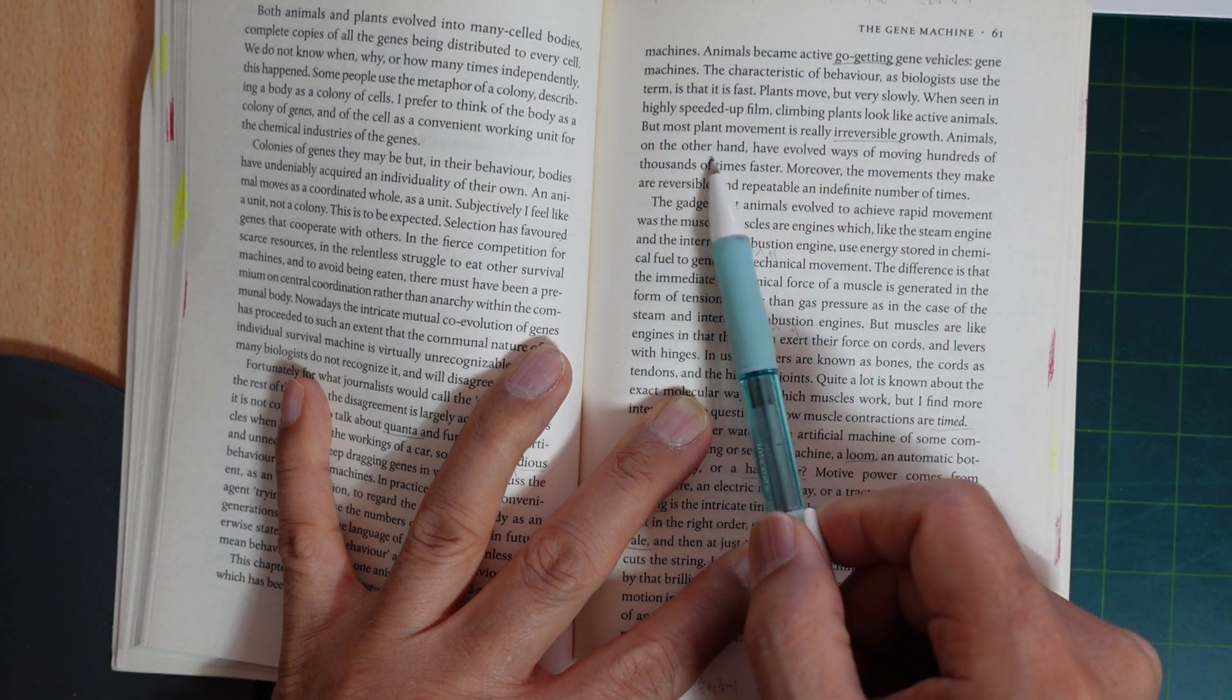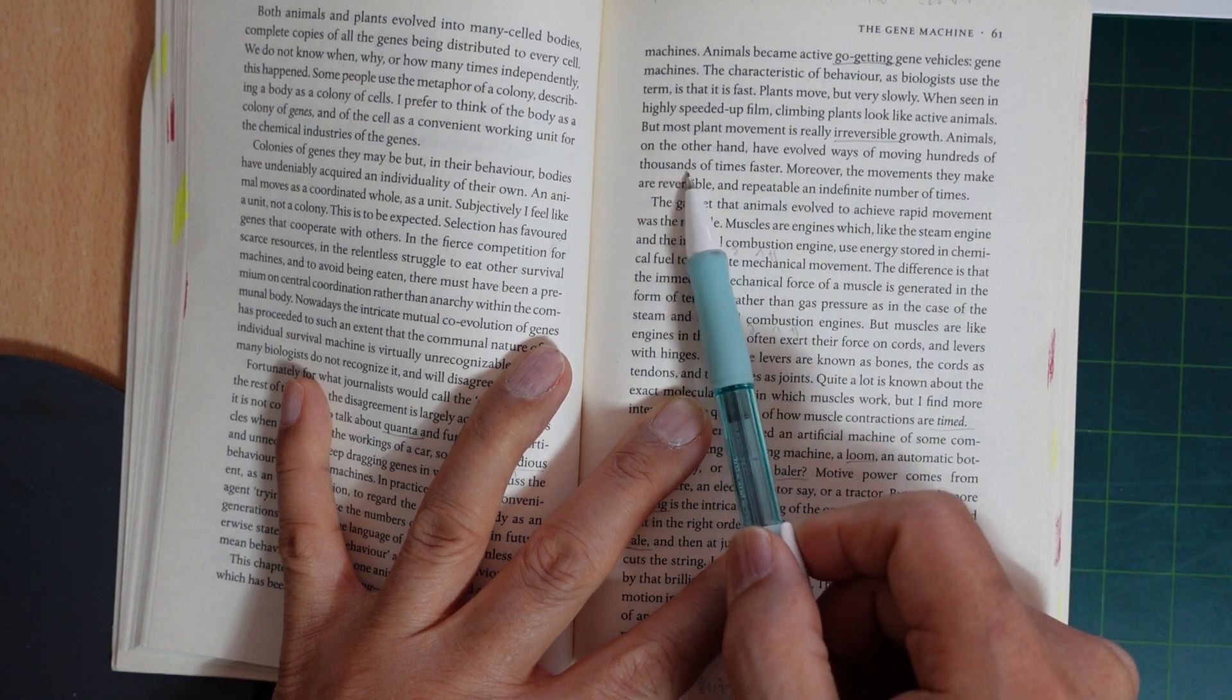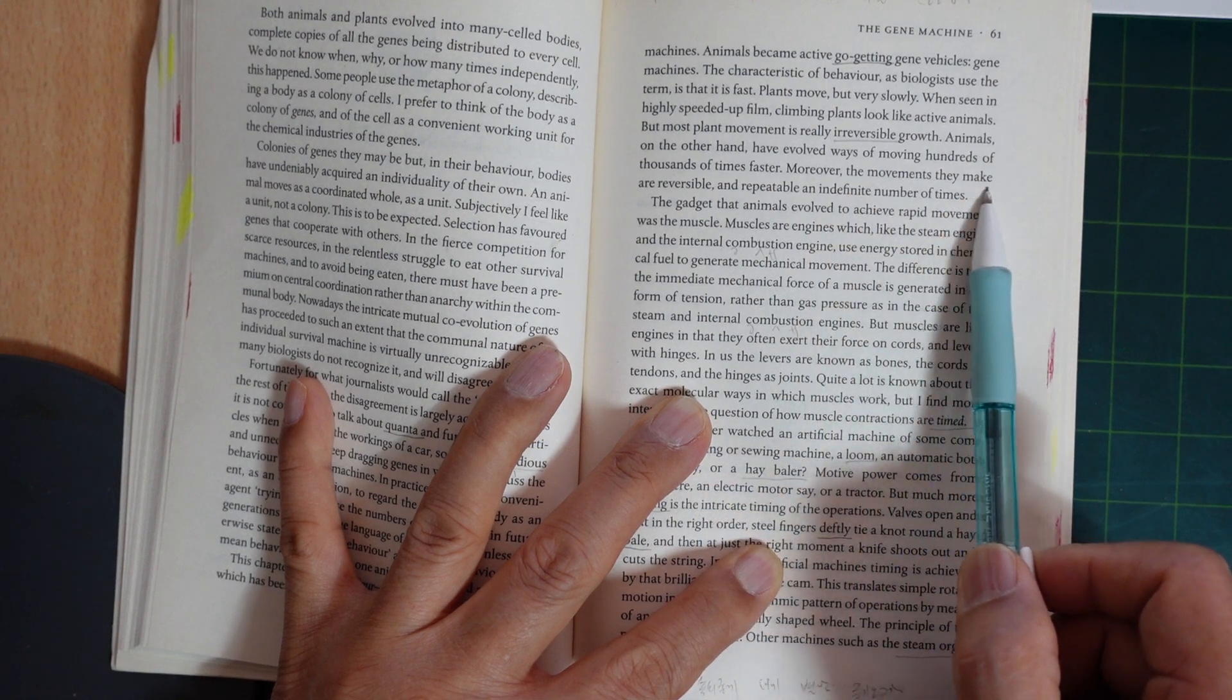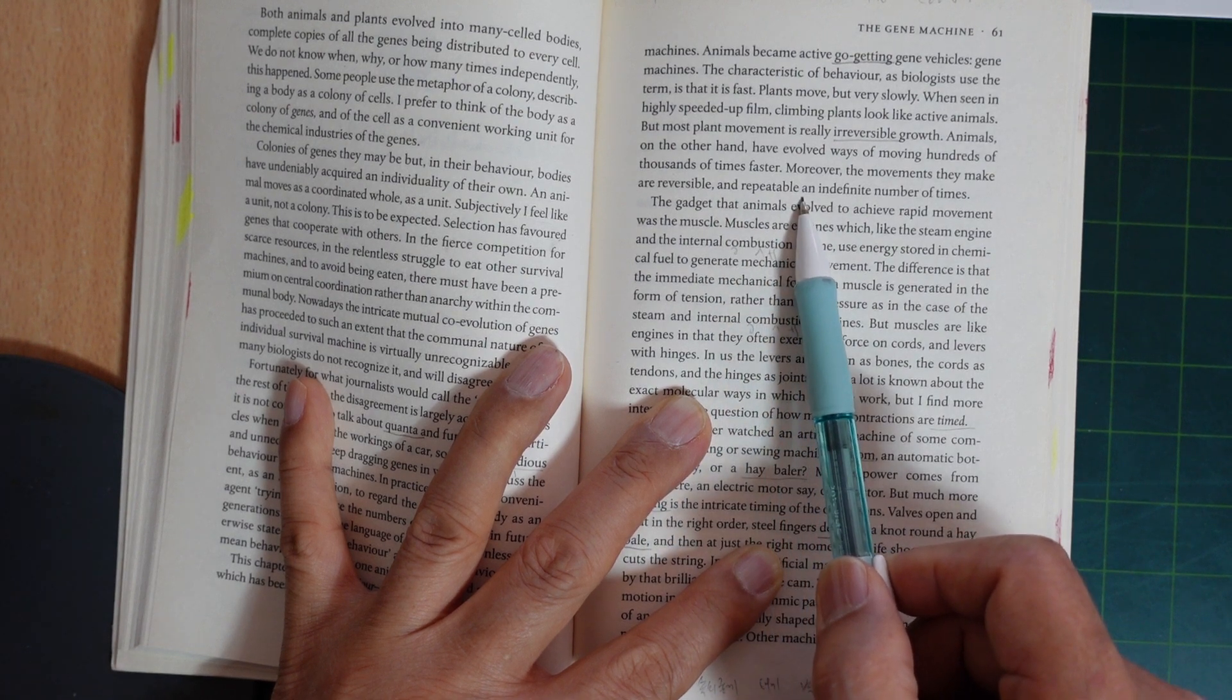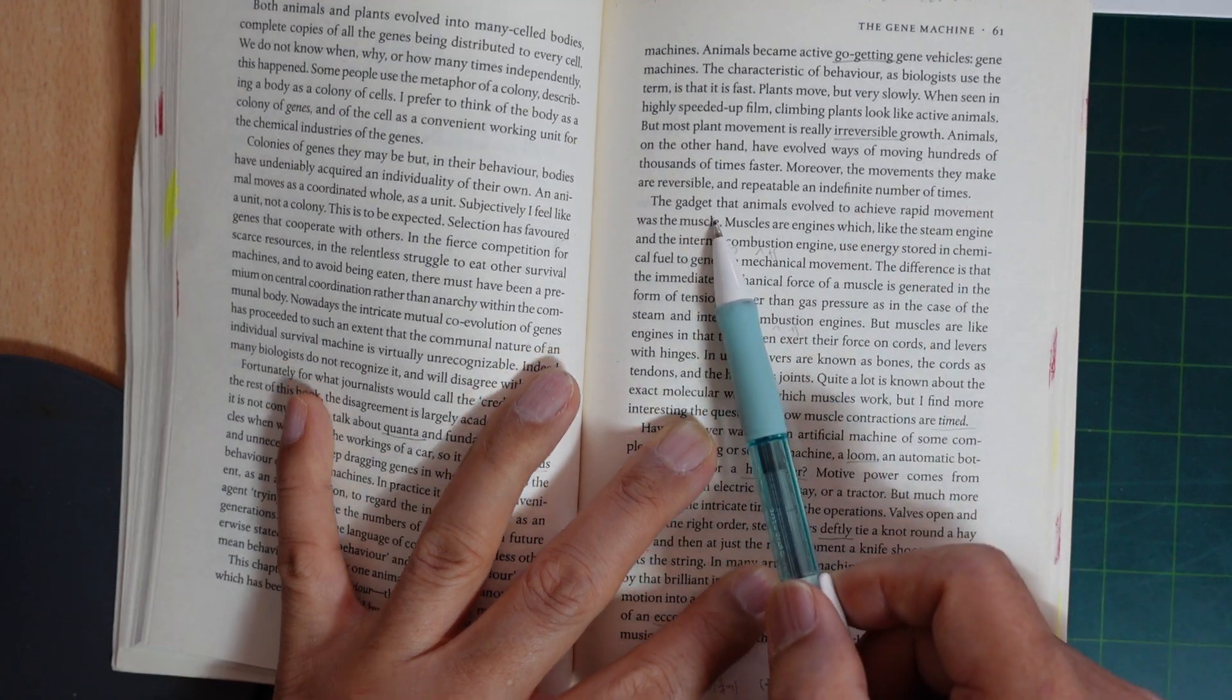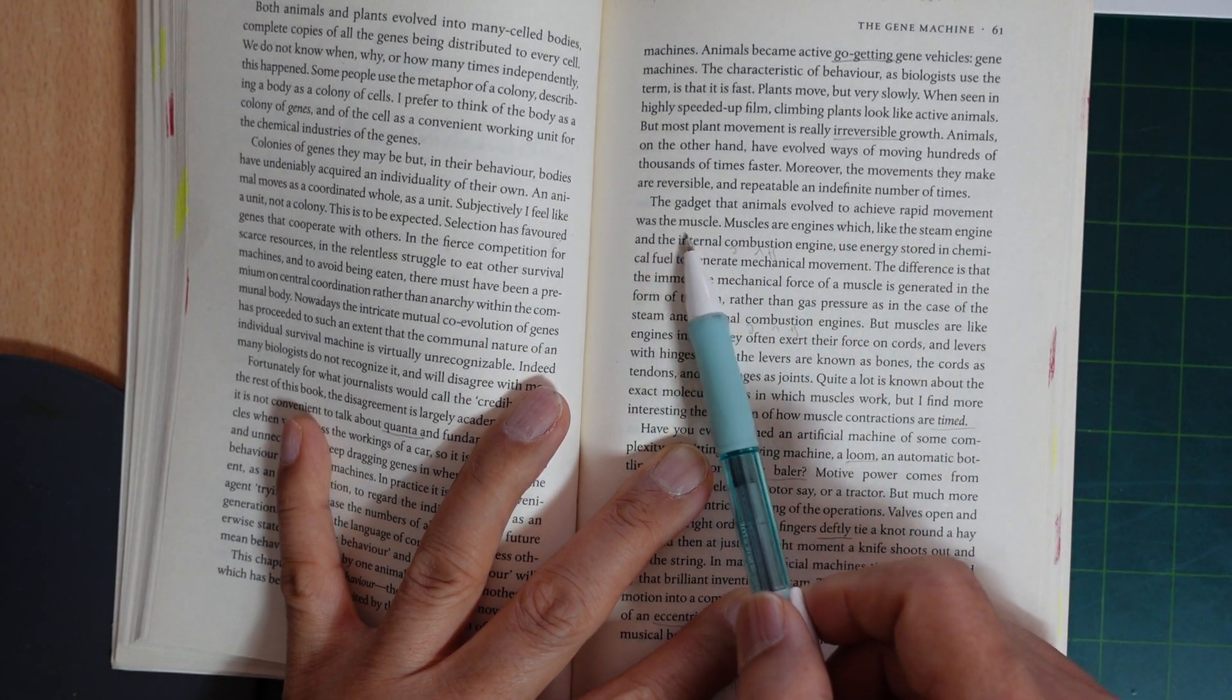Animals, on the other hand, have evolved ways of moving hundreds of thousands of times faster. Moreover, the movements they make are reversible and repeatable an indefinite number of times. The gadget the animals evolved to achieve rapid movement was the muscle.